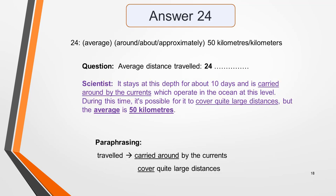Answer 24 is 50 kilometers, but you could also have added the words average, around, about or approximately. Here are the diagram label and the section of recording this answer appears in. The sentence in the recording is: it stays at this depth for about 10 days and is carried around by the currents which operate in the ocean at this level. During this time it's possible for it to cover quite large distances but the average is 50 kilometers. The information in the diagram is paraphrased. The words average and distance have been repeated but travelled has been paraphrased in these two phrases: carried around by the currents, cover quite large distances.